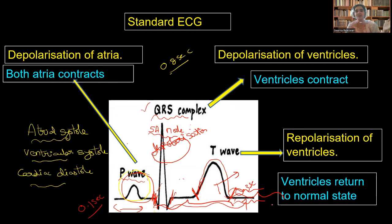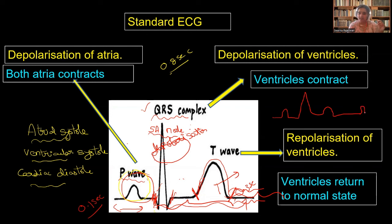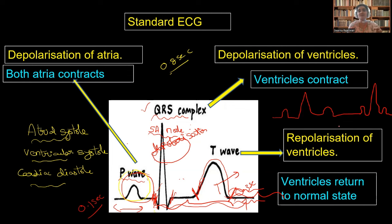Later cardiac diastole proceeds and again the next P wave starts. So this cycle happens like this: first is P wave, then QRS complex, then ventricular relaxation, and the entire heart relaxes. Then again atrial systole, then QRS complex, again ventricular relaxation, and the entire cardiac diastole happens. These phases continue like this, each representing a phase of the cardiac cycle.